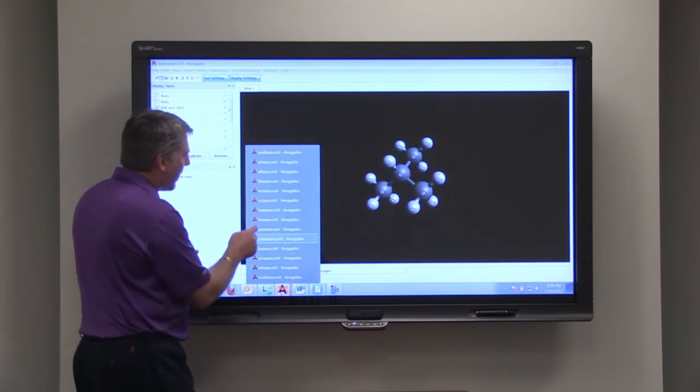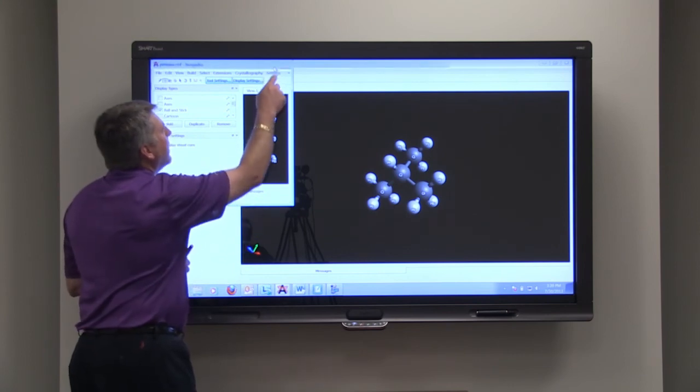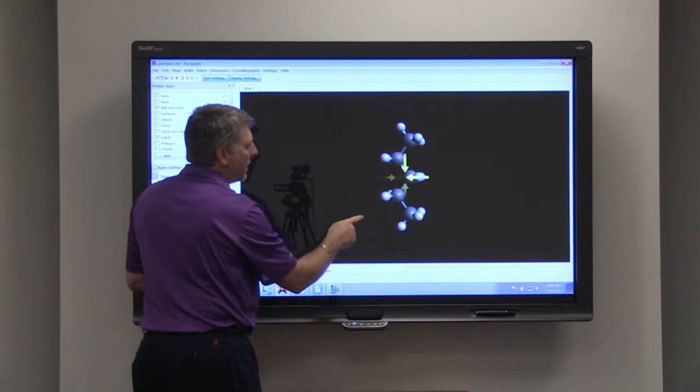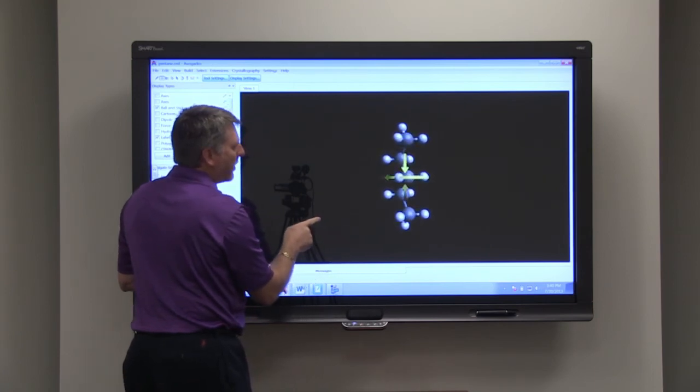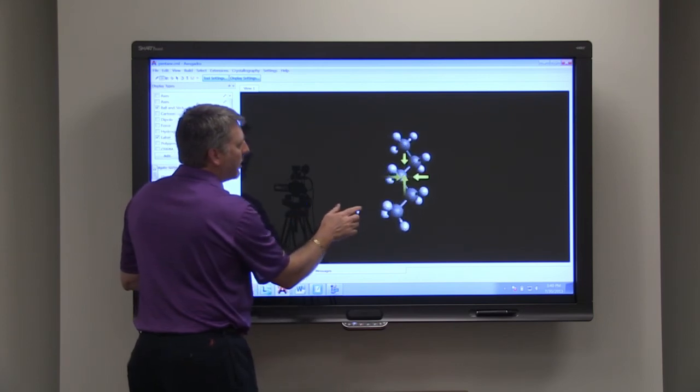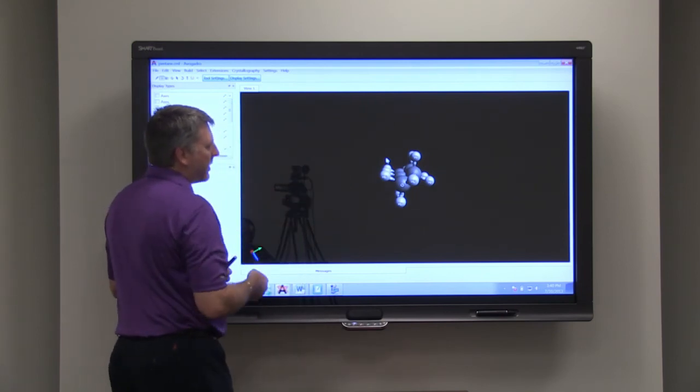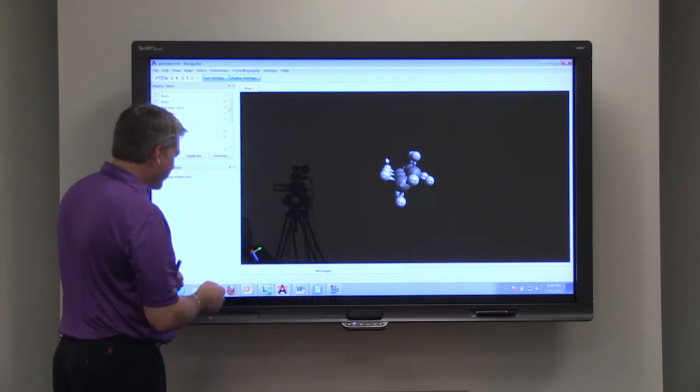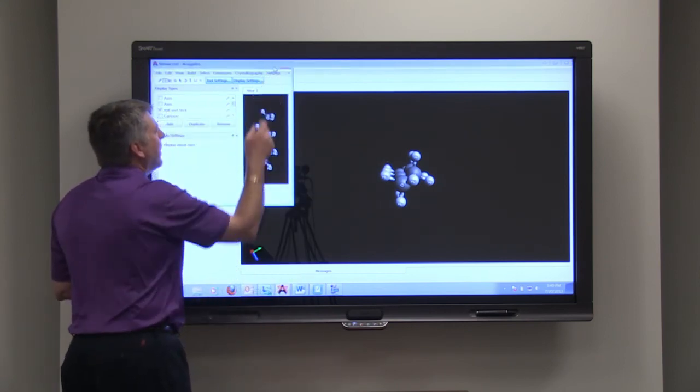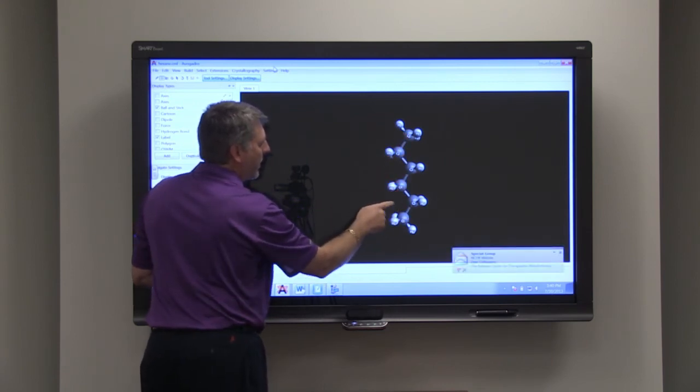So we can go next to look at pentane. And this is just normal pentane. And you can see that we have five carbons in a row. Hexane has six carbons in a row. One, two, three, four, five, six.